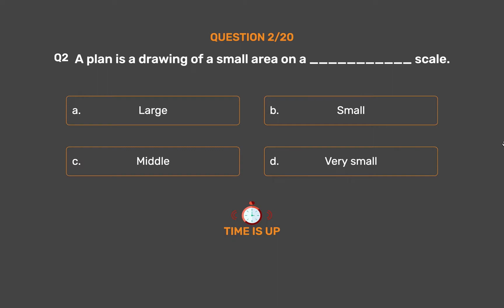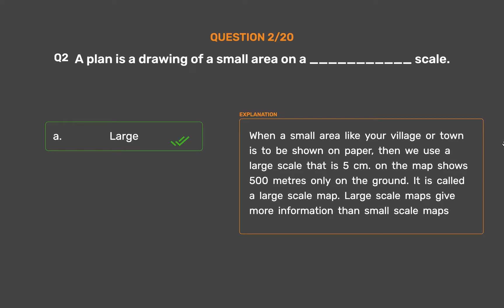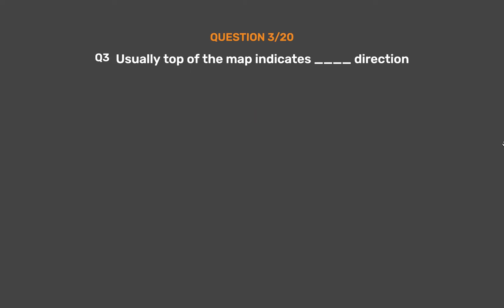The correct answer is Option A: Large. When a small area like your village or town is to be shown on paper, we use a large scale — for example, 5 centimeters on the map shows 500 meters on the ground. It is called a large scale map. Large scale maps give more information than small scale maps.